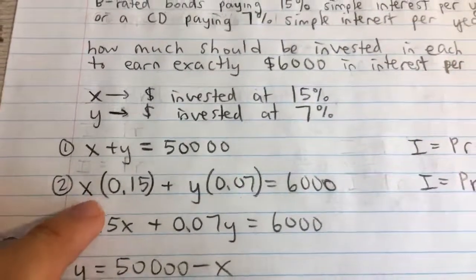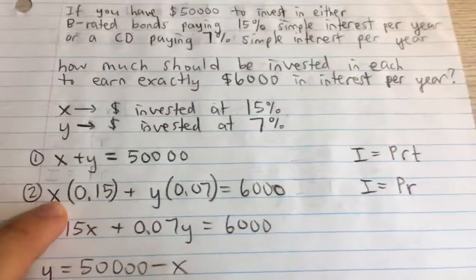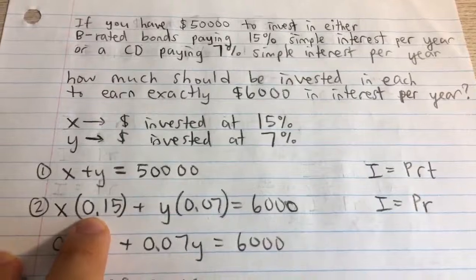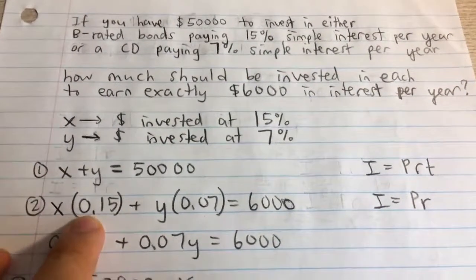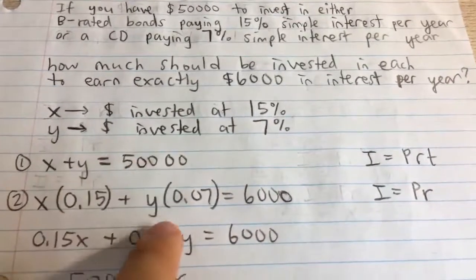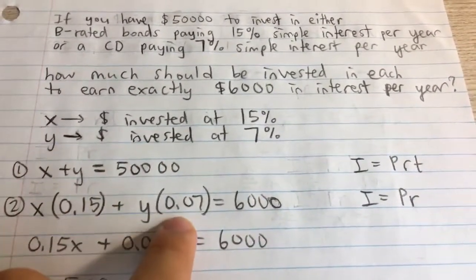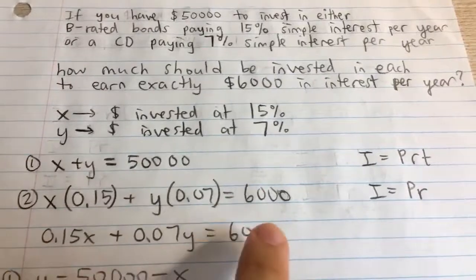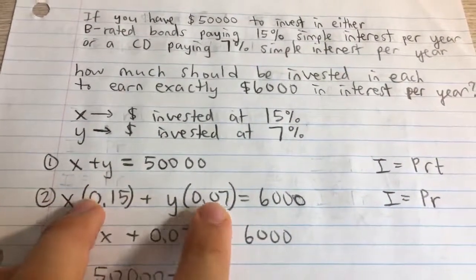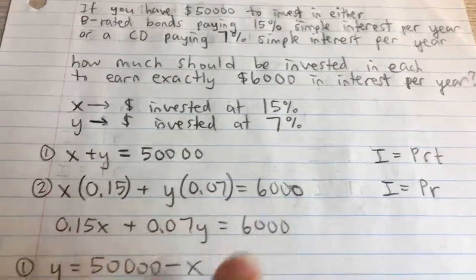Here's what we can do: the amount invested at 15%, which is X, times the rate 0.15, plus the interest from the 7% account, which is Y times 0.07, has to equal $6,000. In other words, the sum of interest from both accounts must equal $6,000.